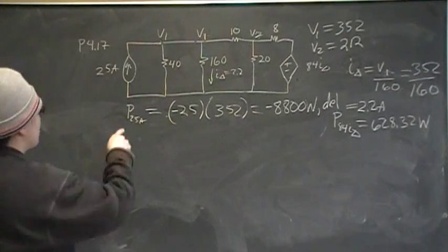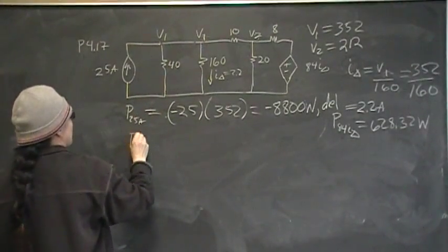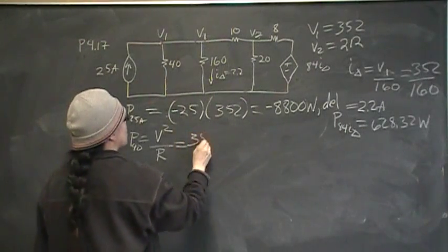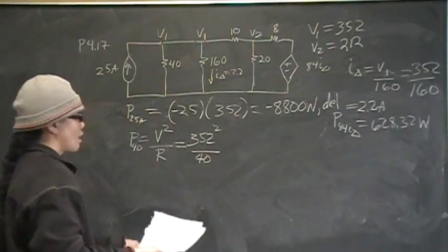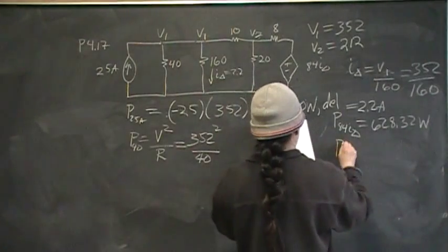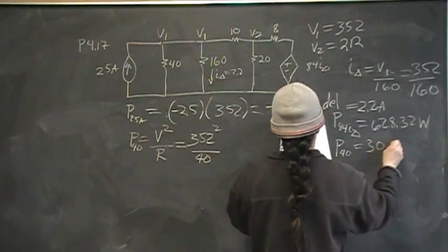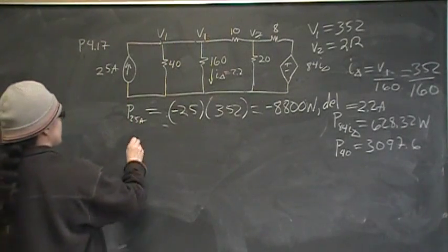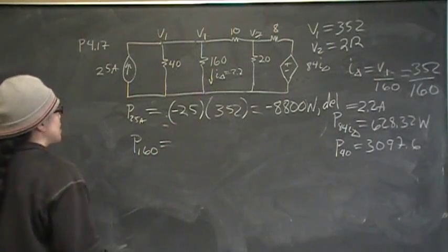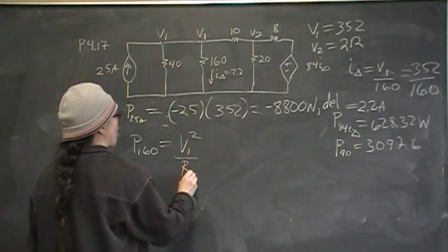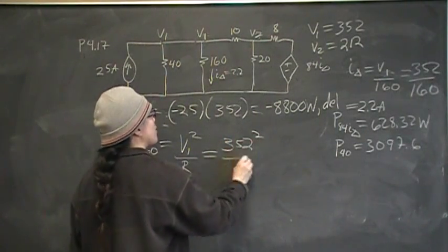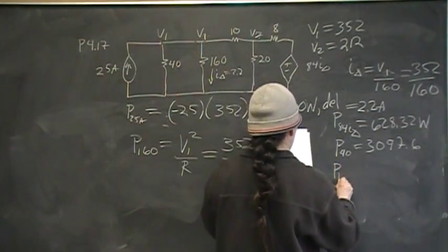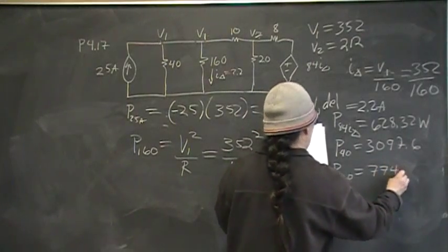So now we got to go through it and find the rest of them and prove that we got the right answer. So let's do power absorbed by 40. So that's going to be P40 is equal to V squared over R. And V1 is 352. 352 squared over 40. And that is going to give me P of 40 ohms 3097.6. Now the next one I want to find is the 160. So the power of the 160 dissipated by the 160 ohm resistor should be V1 squared over R. And that's going to be 352 squared over 160. That will give me 774. So P160 is equal to 774.4.